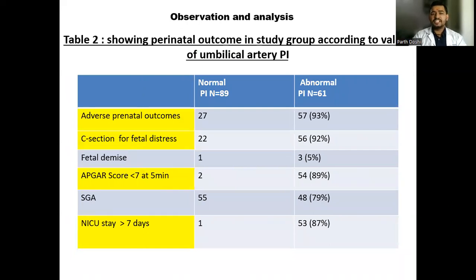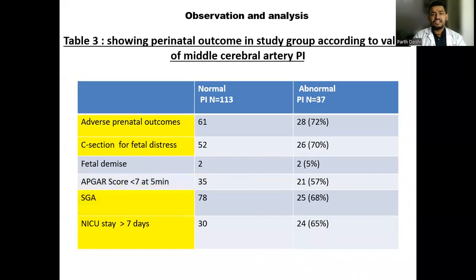This table shows perinatal outcome in the study group according to the value of individual umbilical artery PI. Out of abnormal umbilical artery PI, 93% showed adverse perinatal outcome and 92% showed C-section for fetal distress. This table shows the perinatal outcome according to the value of MCA PI. Out of abnormal MCA PI, 72% showed adverse perinatal outcome and 70% showed C-section for fetal distress.